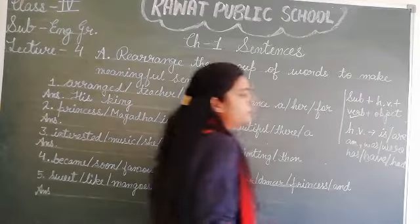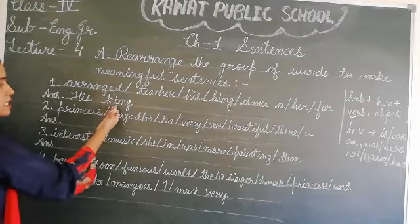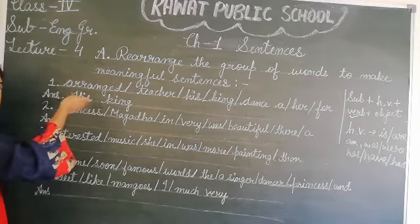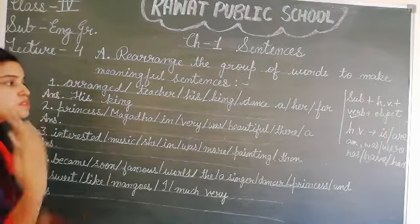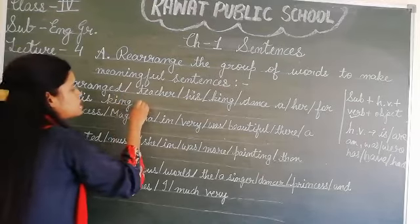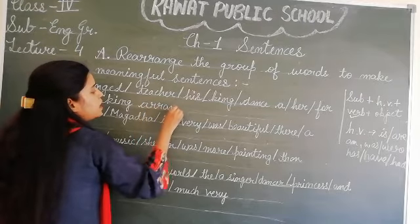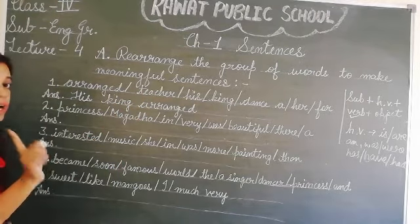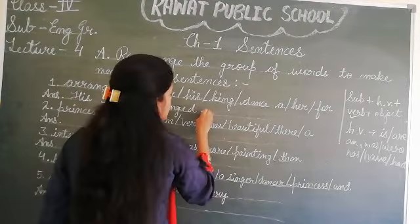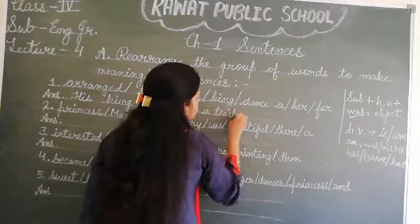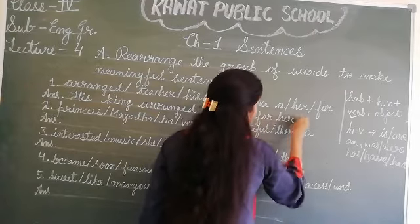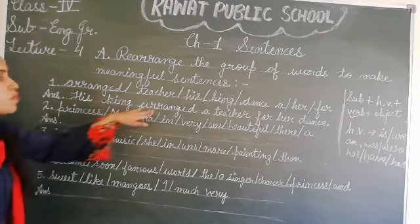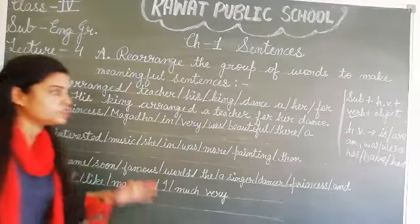We use verb. Verb क्या होता है? Verb का मतलब होता है काम — जो काम होता है वो subject करता है। जो sentence में काम हो रहा है, वो काम ही verb होता है। तो उसके बाद यहाँ पे हम लिखेंगे verb — verb यहाँ पे 'arranged' है। यानि king क्या कर रहा है — arranged कर रहा है। His king is subject, arranged is verb. जो king है, वो arrange कर रहा है teacher को for her dance — यानि उसके dance के लिए teacher को arrange कर रहा है।